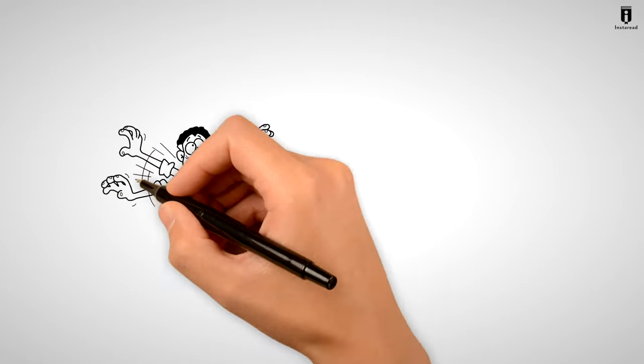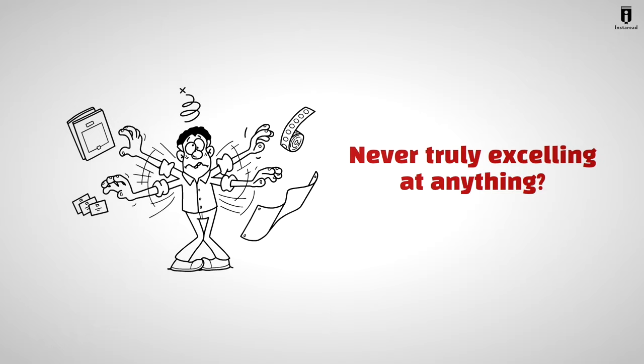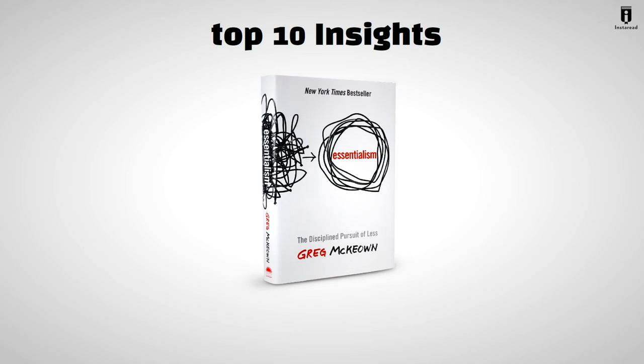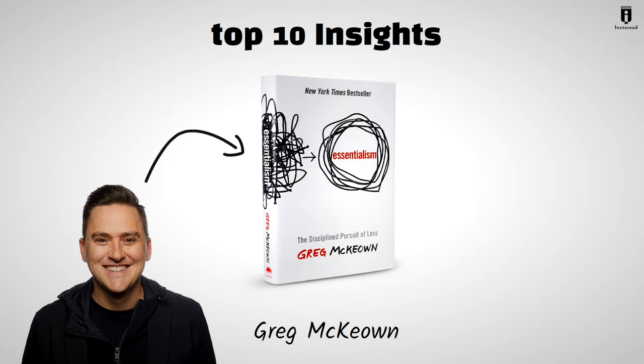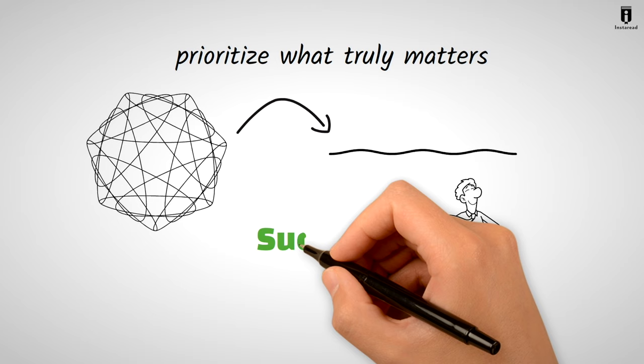Have you ever felt like you're constantly juggling too many things, never truly excelling at anything? Well, you're not alone. In this video, we're going to explore top 10 insights from the groundbreaking book Essentialism, The Disciplined Pursuit of Less by Greg McKeown. Get ready to learn how to declutter your life, prioritize what truly matters, and unlock the secrets of success.